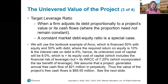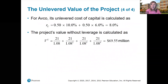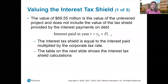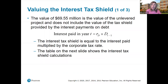We assume that a project generates annual free cash flow of $21 million in perpetuity. Thus, the value of the project's free cash flows is $69.55 million, as you can see on the next slide. That value of $69.55 million is the value of the unlevered project and does not include the value of the tax shield provided by the interest payments on the debt.